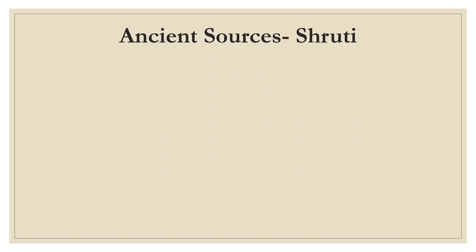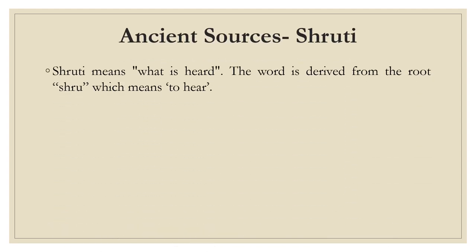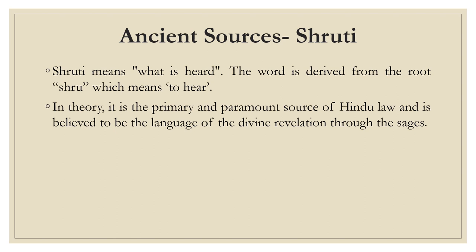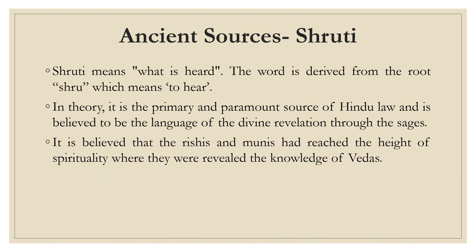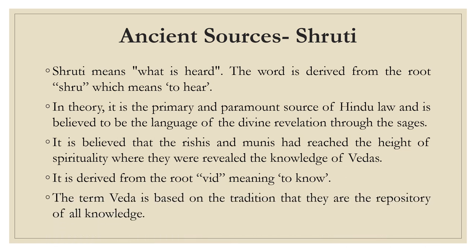The first ancient source is Shruti. Shruti is basically derived from the word 'shuru' which means to hear. In theory, it is a primary and paramount source of Hindu law and it is believed to be the language of the divine revelation to the sages. It is believed that Rishi and Muni reached the height of spirituality that God themselves appeared in front of them, and whatever God preached them, they penned down in a book called Veda. The word Veda is derived from the root 'vid' which means to know, and the term Veda is based on the tradition that they are repository of all knowledge.